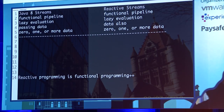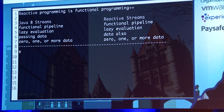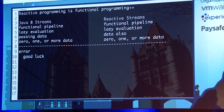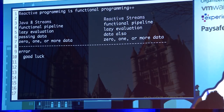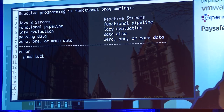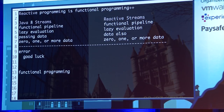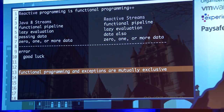What about error? I can tell you how error is handled in Java 8 streams in two English words: good luck. You are essentially out of luck. Java 8 stream says: here is your pipeline, this is like driving on the freeway. You have a flat tire and ask what to do, and Java 8 stream says: blow up the freeway. Functional programming and exceptions are mutually exclusive — it makes zero sense to do exception handling in functional programming.